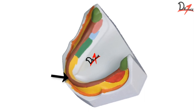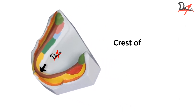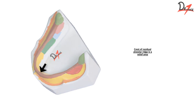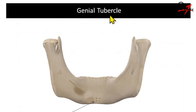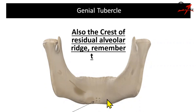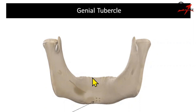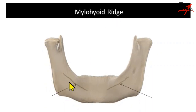The residual alveolar ridge in the mandible resorbs in the outward direction; that is why the mandible becomes wider due to resorption. The various relieving structures are the genial tubercle and the mylohyoid ridge. Because of continuous resorption, the genial tubercles come closer to the crest of the ridge, causing impingement or pain during denture insertion or when load is applied. Similarly, the mylohyoid ridge comes close to the crest of the ridge and gets traumatized with continuous insertion and removal of the denture — that is why you need to relieve this area.